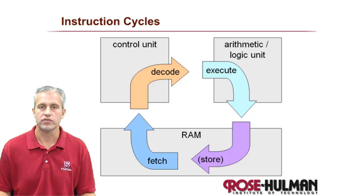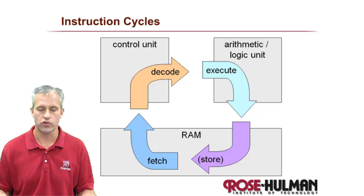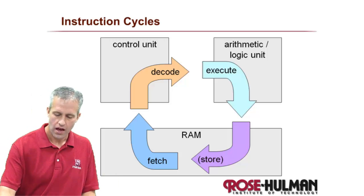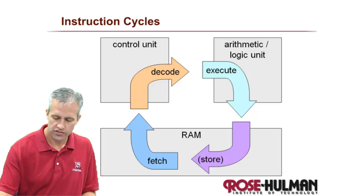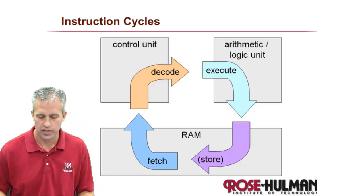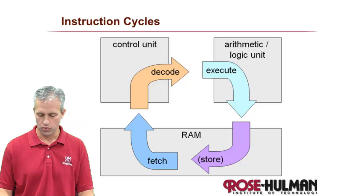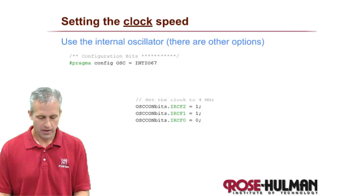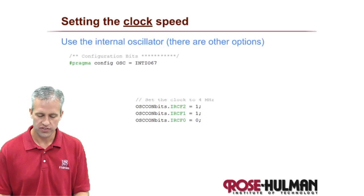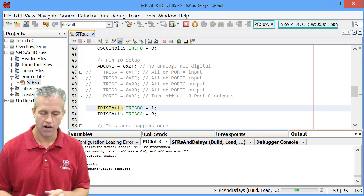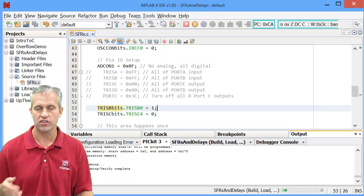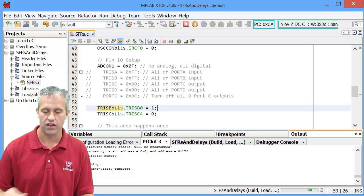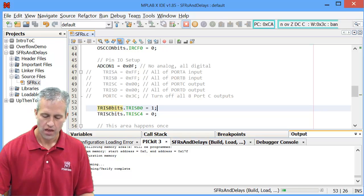Instruction cycles. This one will be a short one. So instruction cycles in the clock — instruction cycles are how fast the clock of the microcontroller is going.